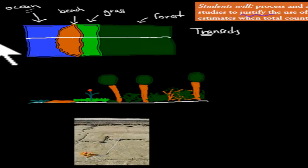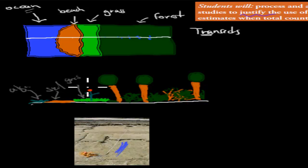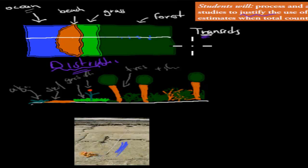Along the transect line, you record what you find. You might find algae in the ocean, only sand on the beach, some grass and maybe one flower in the grassy area, and lots of trees and shrubs in the forest. So a transect — a long line — is used to measure distribution: what you can find in each area, not usually how many.